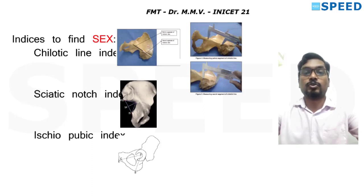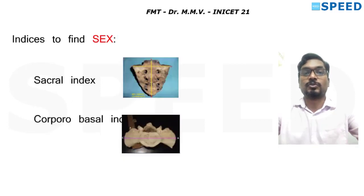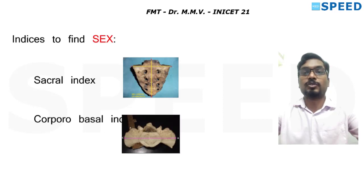Now for sacral indices — pay attention, as these can be confusing. Sacral index is the ratio of breadth of sacrum (also called antero-superior breadth or maximum breadth) divided by the antero-superior length of sacrum. So breadth divided by length is the sacral index.